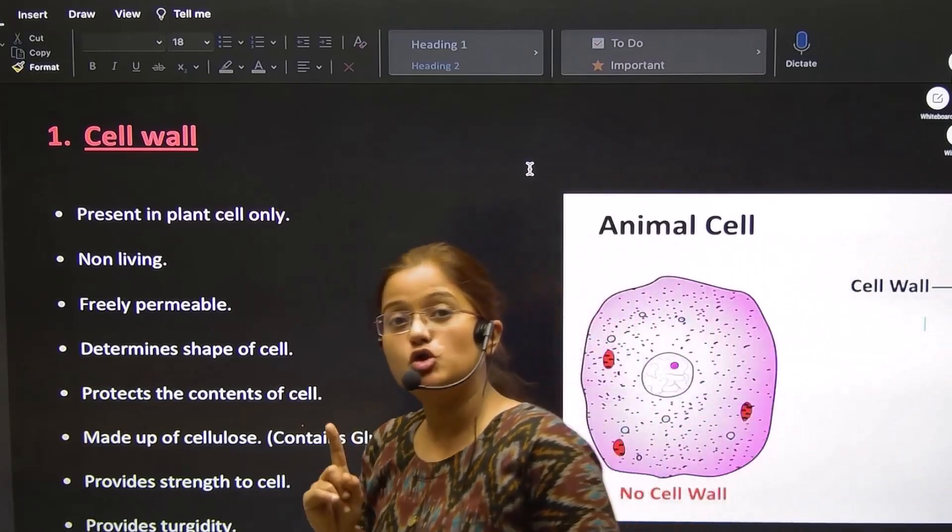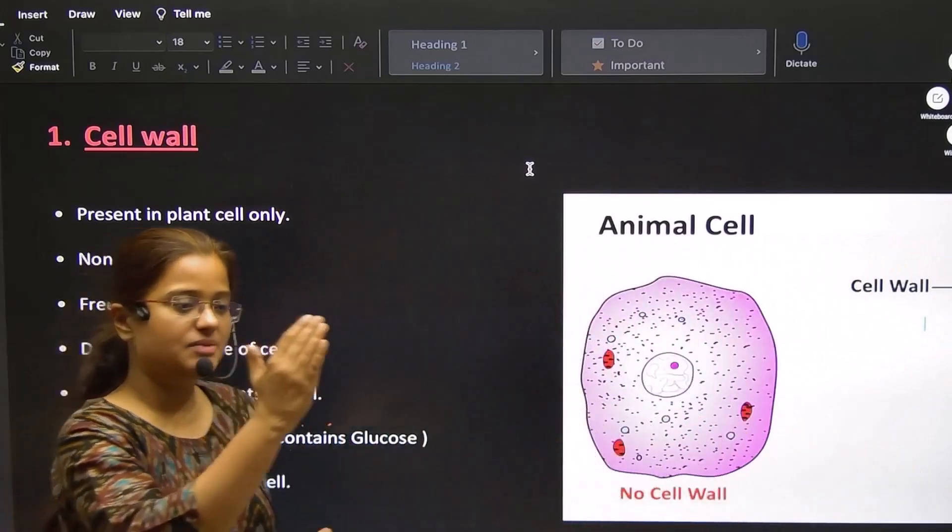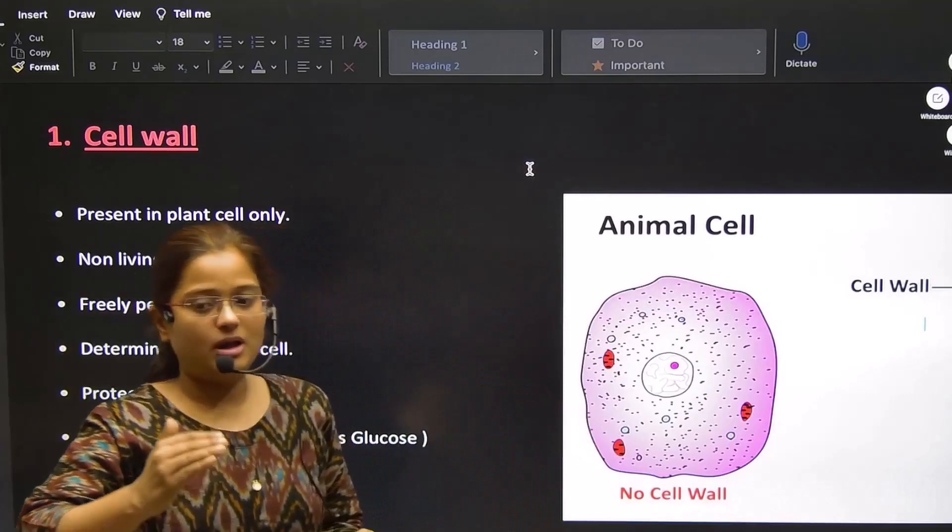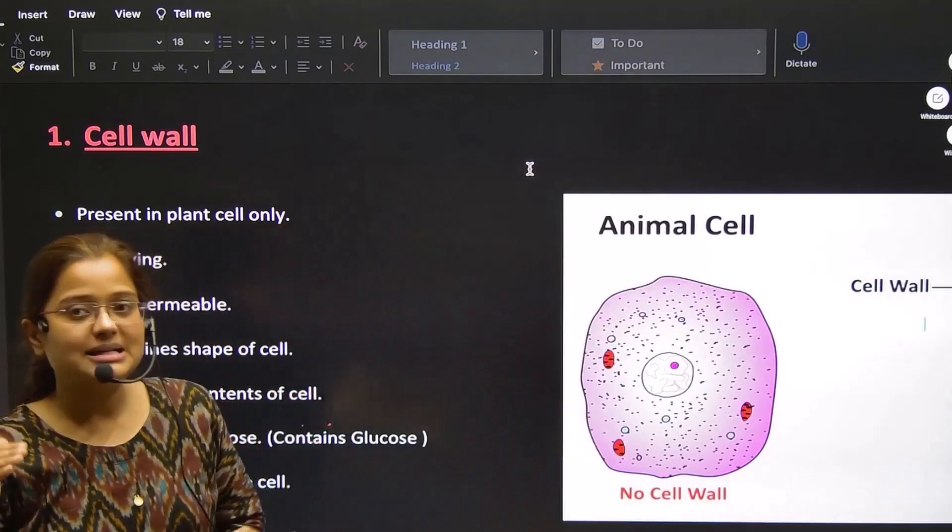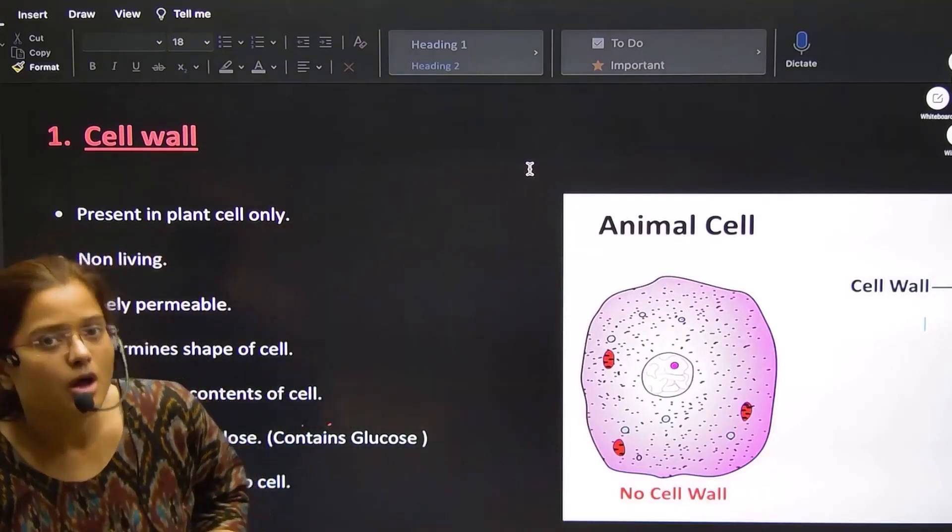This is not in the animal cell. In the animal cell, there are only cell membranes. In the plant cell, there are cell membranes and cell walls. Look, the cell wall is present only in the plant cell.